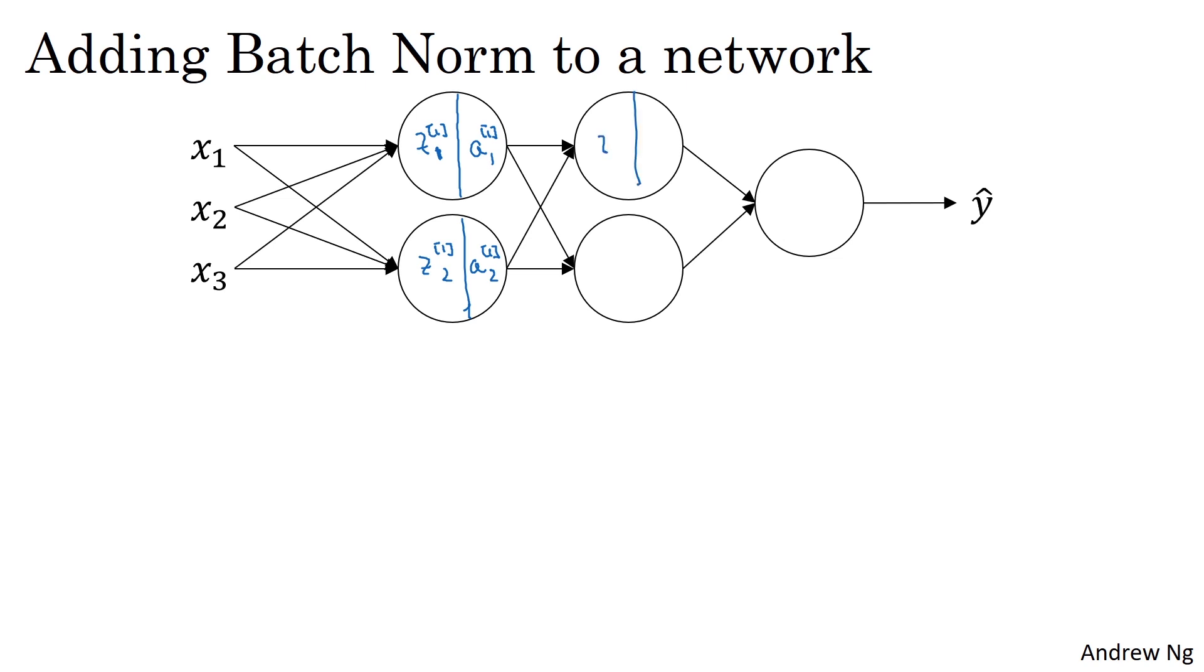You can think of each of these circles as representing a two-step computation. And similarly for the next layer, that's z21 and a21 and so on.